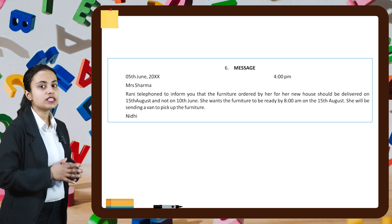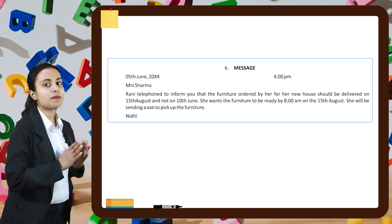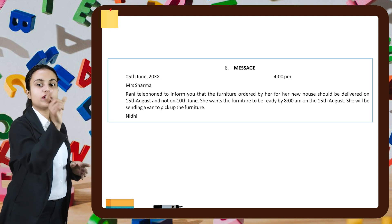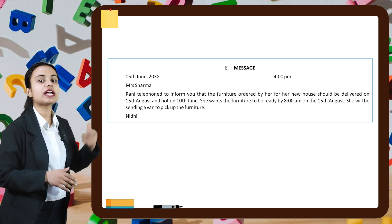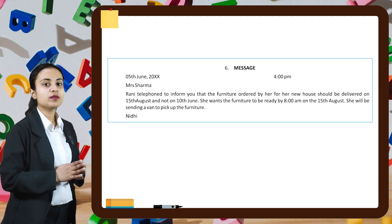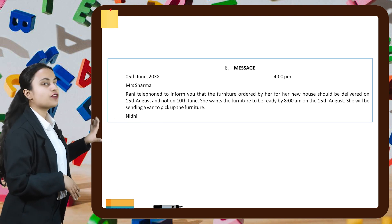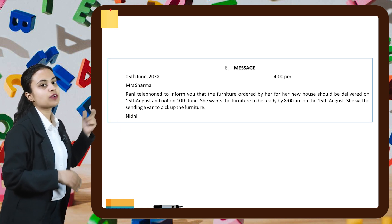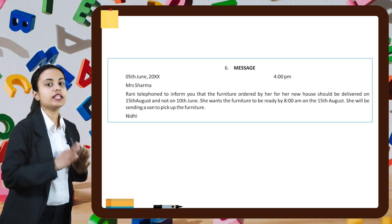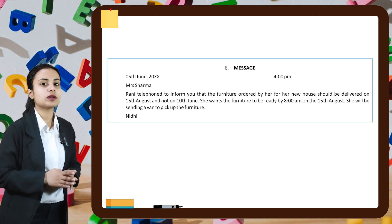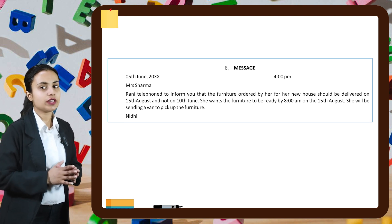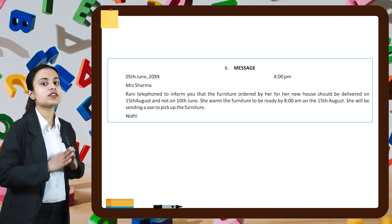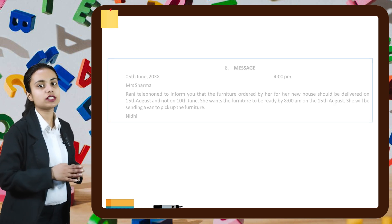We have to convey this message to the shop owner. For writing messages, we first draw a box. At the top in the middle, we write 'Message.' On the left hand side, we write the date with time. On the right hand side, we write 'Mrs. Sharma.' Then we start the content: 'Rani telephoned to inform you that furniture ordered by her for her new house should be delivered on 15th August and not on 10th June. She wants the furniture to be ready by 8am on the 15th of August.'